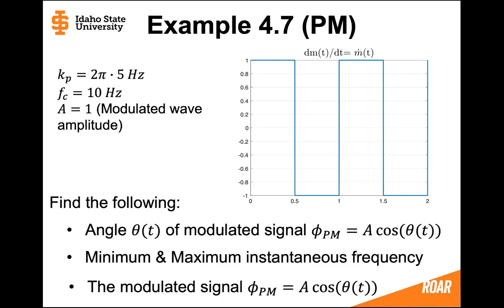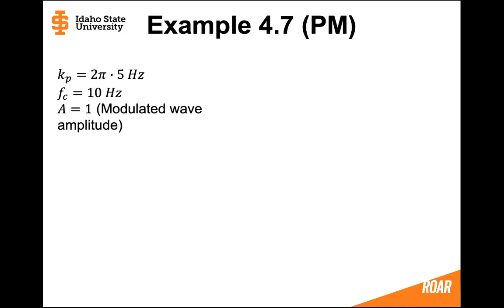Remember, it's usually easy to find the angle of the phase modulated signal. However, because we're given the derivative of the message, this time it will actually be easier to find the instantaneous frequency for the phase modulated signal than it is to find the angle. Let's see why that is.